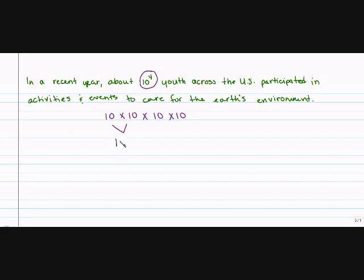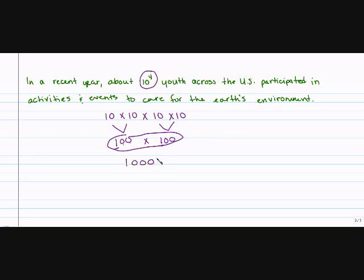Ten times ten is a hundred, and another ten times ten is a hundred. A hundred times a hundred — you multiply the numbers in front together: one times one is one, then add the zeros: one, two, three, four from the first hundred and one, two, three, four from the second. Put the decimal every three spaces: that's 10,000. So 10,000 youth across the U.S. participated in activities and events to care for the earth's environment.